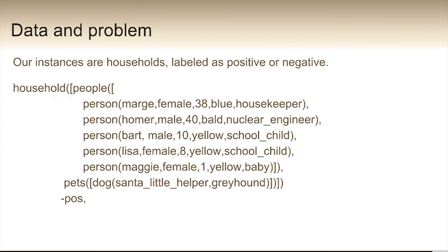So what we're going to do in this example is we're going to classify some different households from different cartoons and things. So we've represented our data like this. And we have households with people and pets. And it's just a pair household and the class here. This is positive.